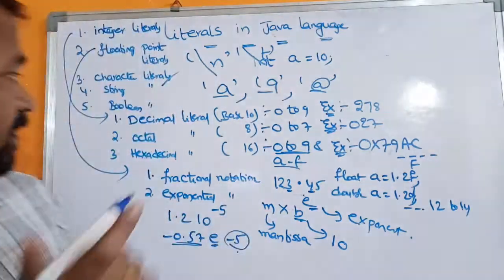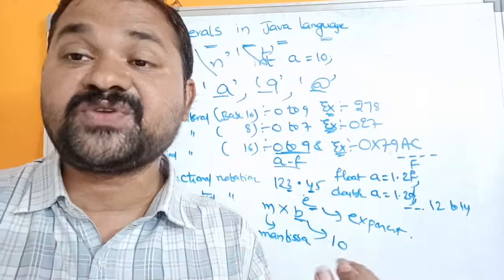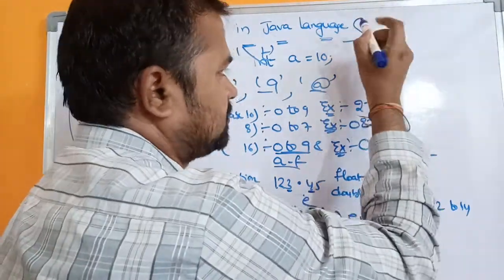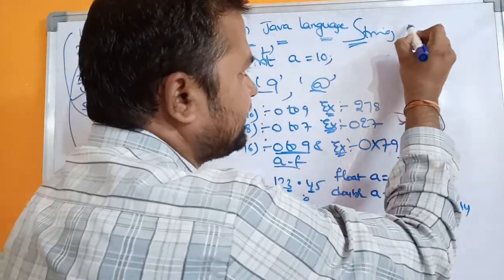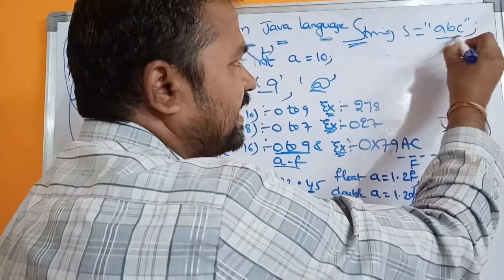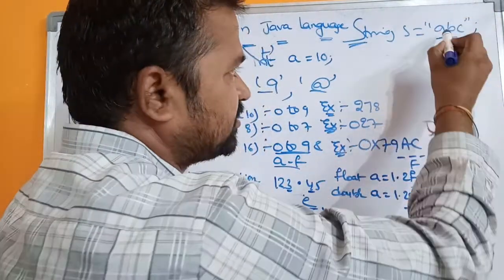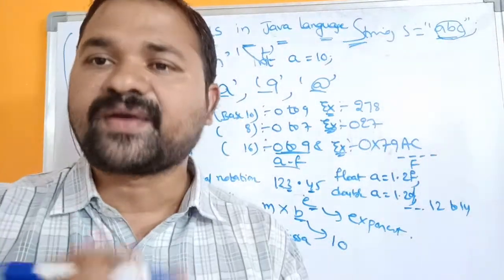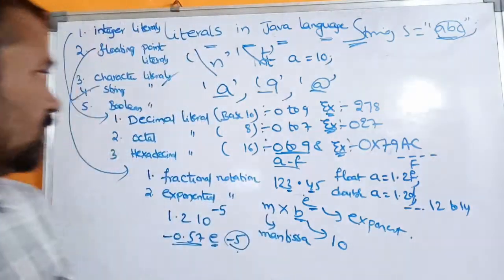The fourth type is string literal. In Java, a string is a collection of characters, and string is treated as a class, so S is uppercase. For example, 'String s = "abc"'. A string is a collection of characters enclosed in double quotation marks, and the characters may be alphabets, digits, symbols, or combinations.